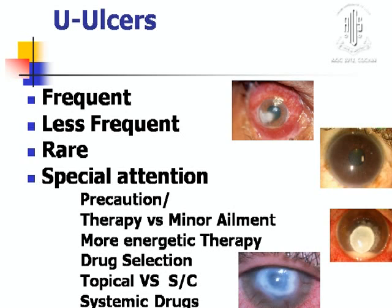A few words about ulcers: frequent ulcers are bacterial and viral, less frequent is fungal, and rare is Acanthamoeba. Always take precaution not to develop ulcers. If there is a minor ailment, do the therapy and treat those eyes. Proper drug selection is important because some drugs are hazardous to the pediatric eye. As compliance is poor in children, subconjunctival injection can be given, and systemic drug is a must.